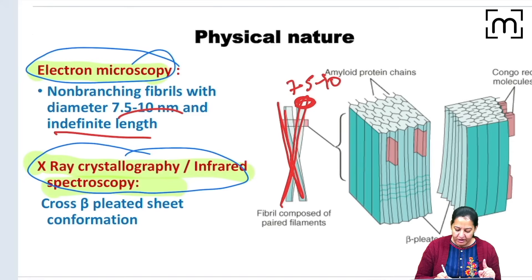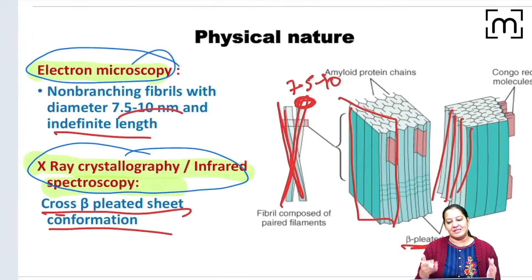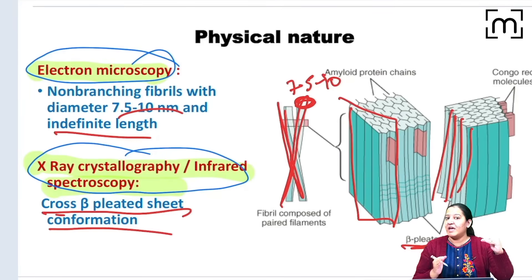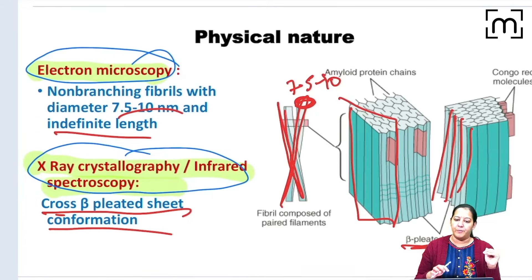On X-ray crystallography and infrared spectrometry, amyloid forms a cross-beta pleated sheet structure. Many MCQs come on the physical nature, so be specific: the structure on electron microscopy is non-branching elongated fibrils, while on X-ray crystallography and infrared spectrometry it is the cross-beta pleated sheet structure — both are different.